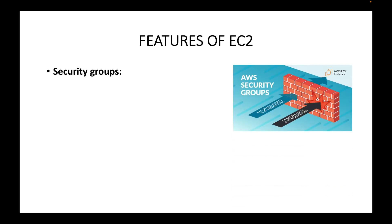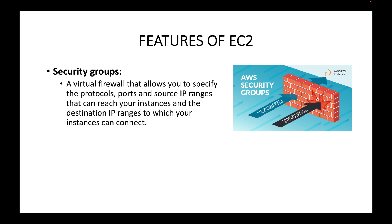Then we have security groups — these are nothing but your firewall. We can use security groups to control what traffic can come in and what traffic can go out of your EC2 instances. This acts as a virtual firewall, and we can use it to specify on what port numbers you want to allow traffic, from which source IP address, and what destination IP ranges your instances can connect to. All that information can be defined in security groups to control access to your EC2 instances.